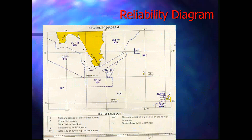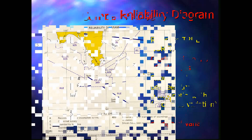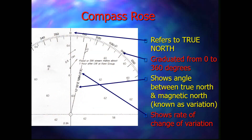The reliability diagram is placed on the chart and allows you to assess the limitations of the hydrographic data from which the chart was compiled. Note the references to the accuracy of the soundings and the distance apart from the main lines of soundings. This gives you an indication of how reliable the chart data is.